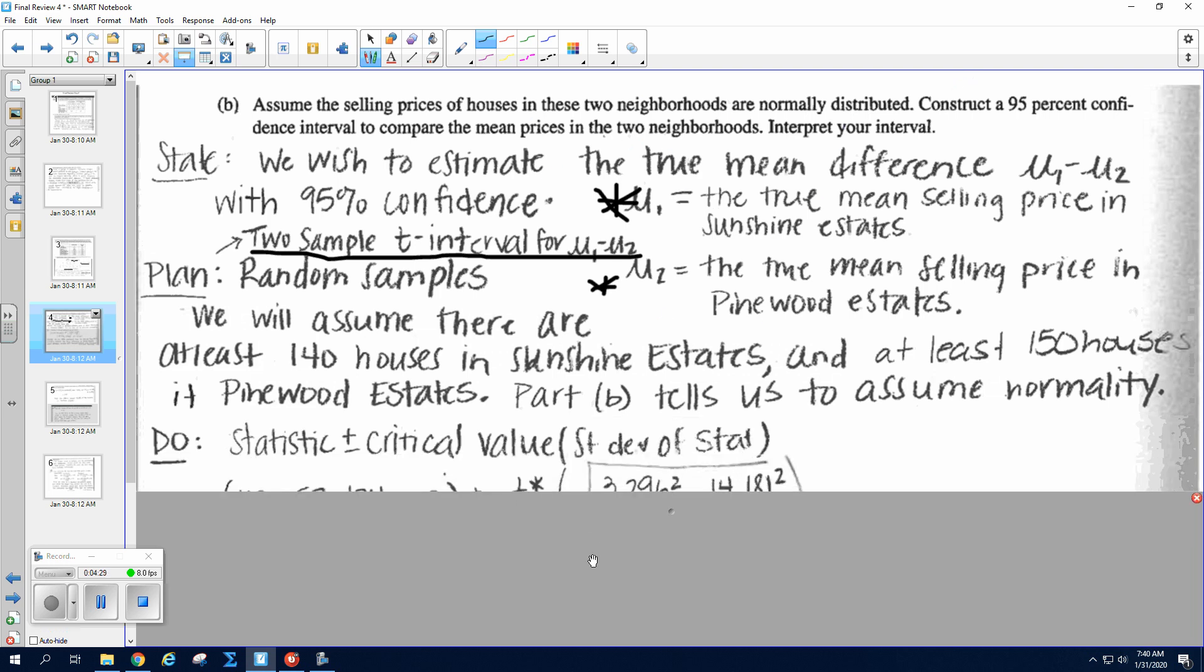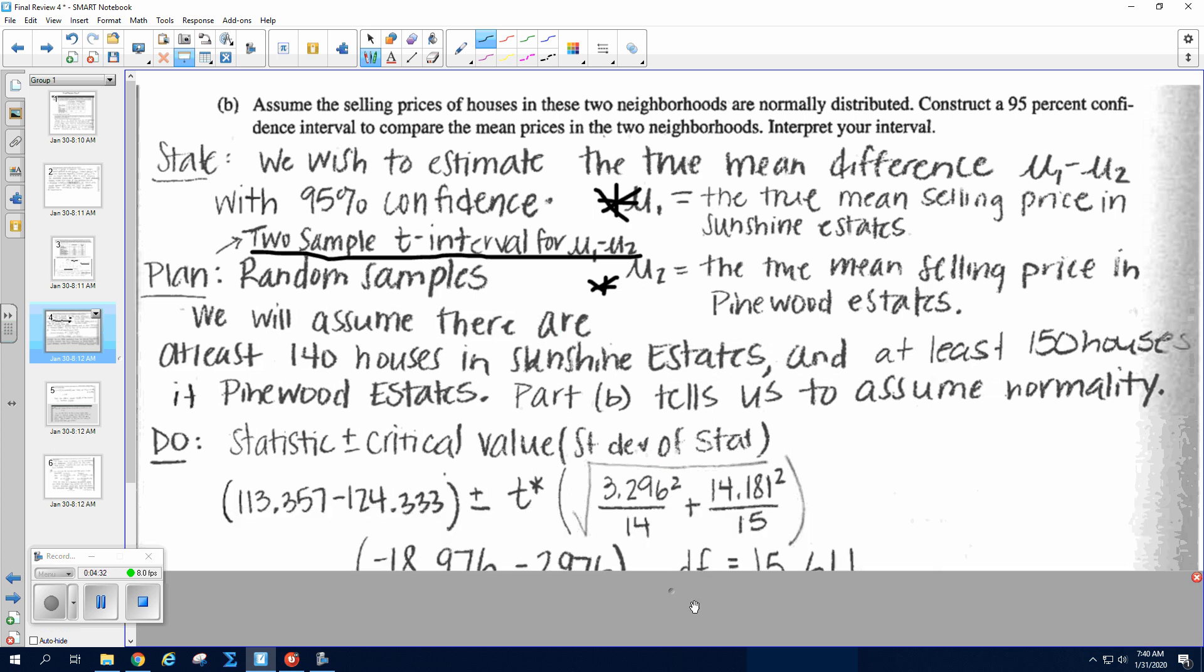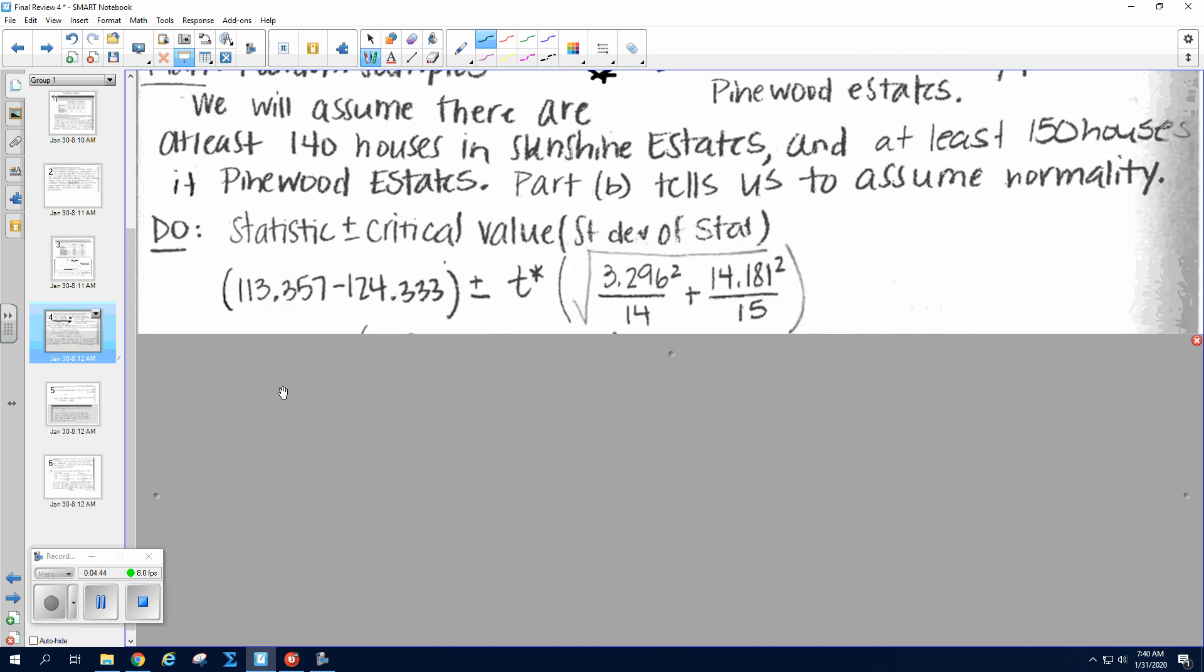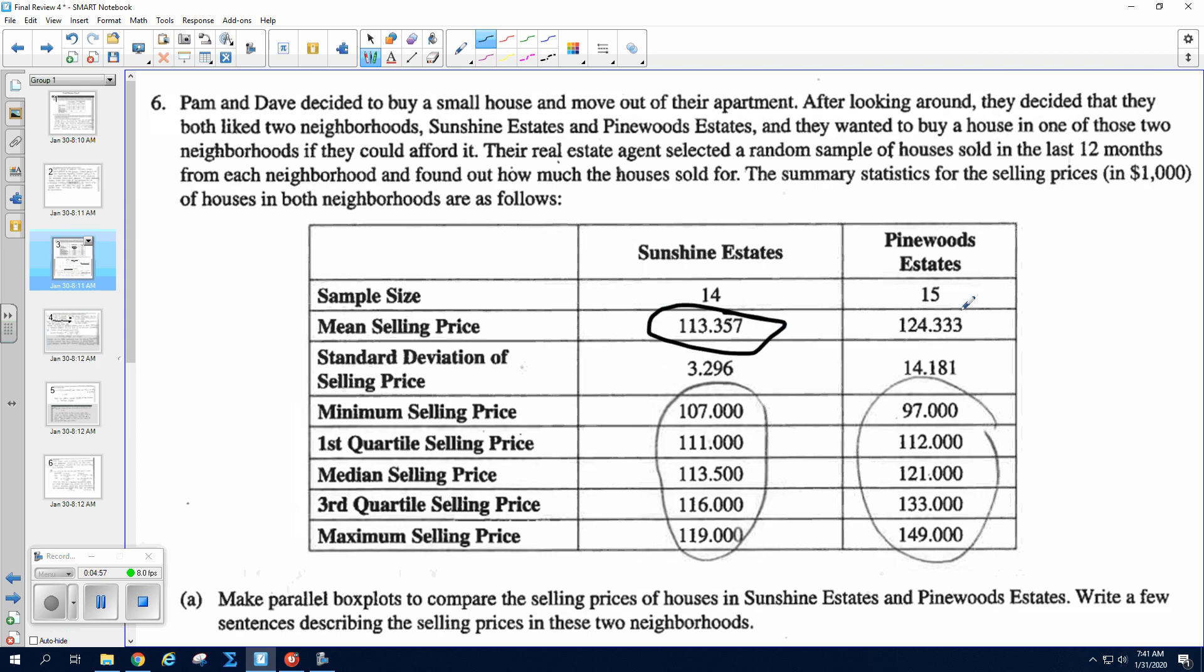All right, part B actually already told us to assume normality, so somewhere in there it already said to assume normality. All right, and then this is the only formula given to you for a confidence interval, you guys: the statistic plus or minus critical value times standard deviation of the statistic. In this case, our statistic is subtracting our x-bars, so be sure you subtract in the same order that you did μ₁ minus μ₂.